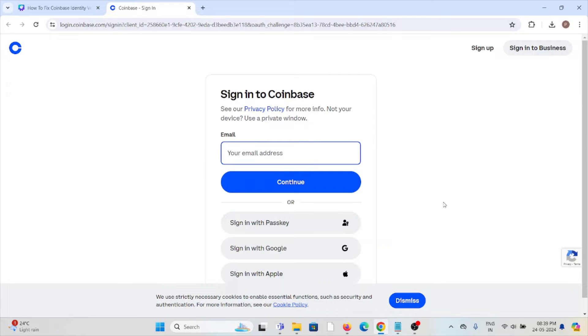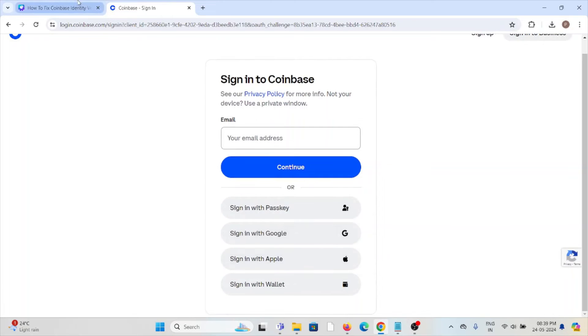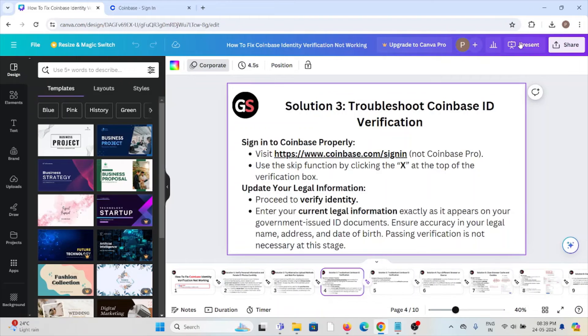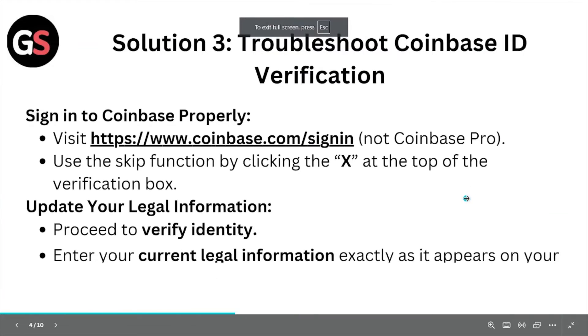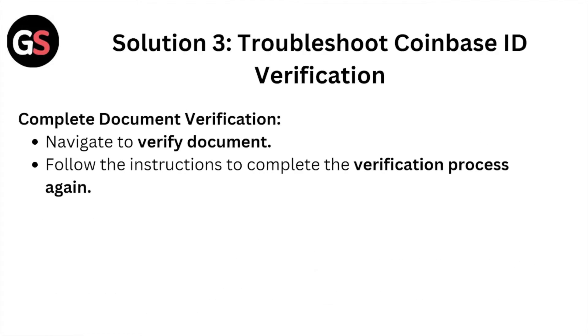Solution number three: double-check the Coinbase ID verification. Sign into Coinbase properly through the website at login.coinbase.com — enter your email ID and continue. You can also log in with your Google or Apple account. Use the skip function by clicking the X at the top of the verification box. Update your legal information and proceed to verify your identity, entering your current legal information exactly as it appears on your government-issued ID documents. Ensure accuracy in your legal name, address, and date of birth. Complete document verification by navigating to verify document and follow the instructions.